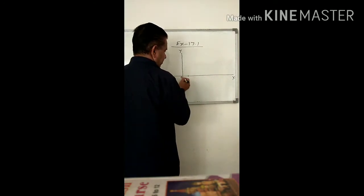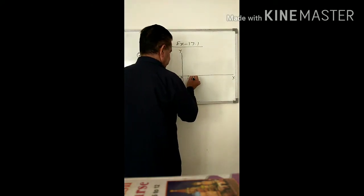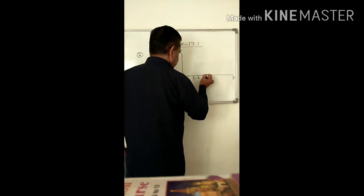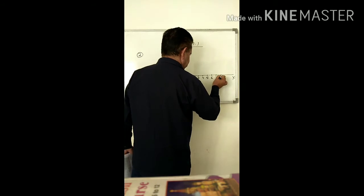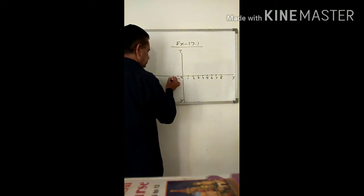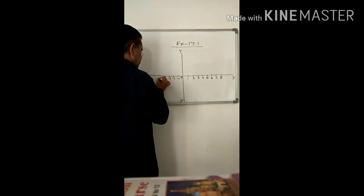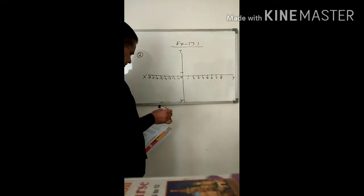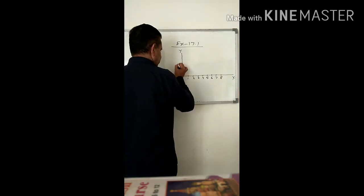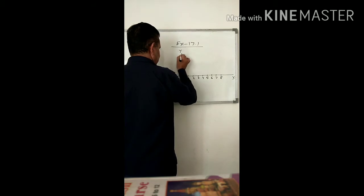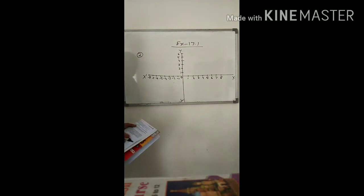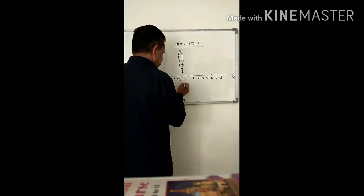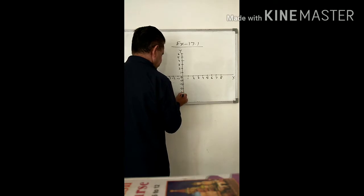X value from origin to the right side is positive: 1, 2, 3, 4, 5, 6, 7, 8. And negative: minus 1, minus 2, minus 3, minus 4, minus 5, minus 6, minus 7, minus 8. Y-axis values: 1, 2, 3, 4, 5, 6 and minus 1, minus 2, minus 3, minus 4, minus 5.